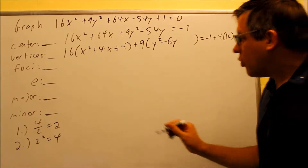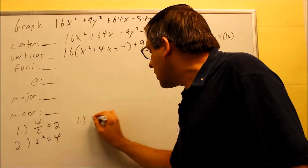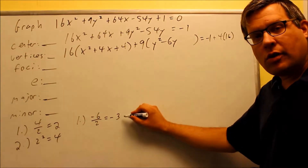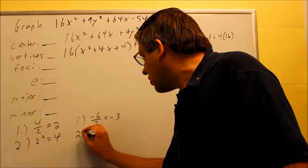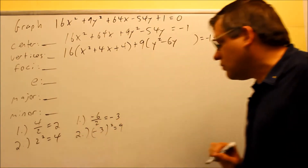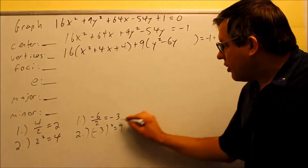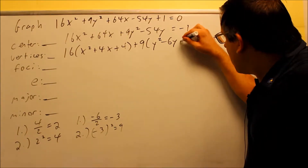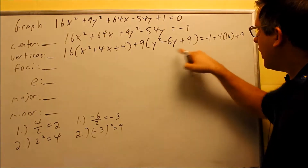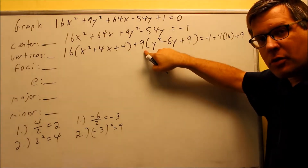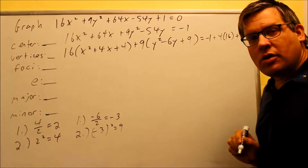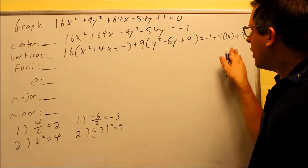For the y group, we take negative 6 divided by 2, which gives negative 3 — that's step one. Step two: negative 3 squared equals 9. We add the 9 inside the parentheses, and on the other side we add 9 multiplied by the number outside the parentheses, which is also 9. So now this is properly done.